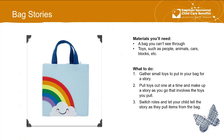Bag stories: materials you'll need are a bag you can't see through and some small toys such as people, animals, cars, and blocks. Put those in the bag, sit down with your child, and pull out the toys one at a time. As you pull out a toy, start making up a story. Pull out another toy and continue the story, involving that item. Then switch roles and let your child make up and tell a story as they pull items from the bag.